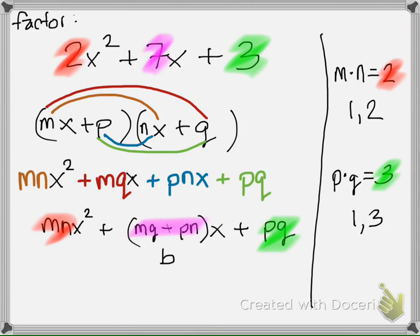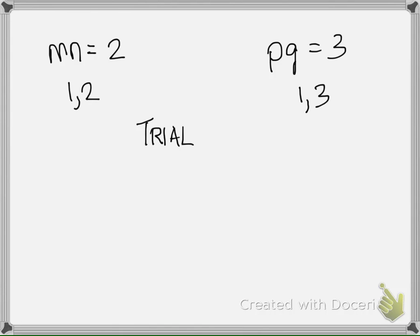So I'm going to use a clean sheet of paper. Remember, mn is equal to 2 and pq is equal to 3. The only way to get mn is 1 times 2. The only way to get to pq is 1 times 3. Now you need to do some trial factors to put it all together. mn is going to be your first terms. Your pqs are going to be your last terms.